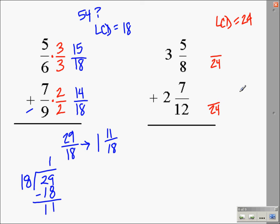I'm going to find my fractions of 1. 8 times what will give me 24? 3. And here, 12 times what will give me 24? It will be 2. So there's my fractions of 1. Remember, multiplying by 1 doesn't hurt anything. So let's do the numerators. 5 times 3 is 15, 7 times 2 is 14.